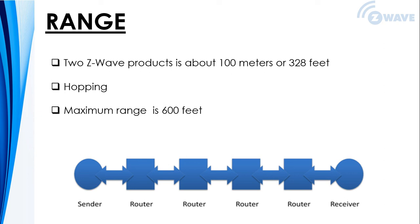If there is a wall interfering with the signal, all you need is a simple Z-Wave repeater to work around the wall so that the signal can continue on to its final destination. Z-Wave supports up to four hops, so the total home coverage will grow depending on the amount of Z-Wave products on the network. The maximum range with four hops is roughly 600 feet or 200 meters.